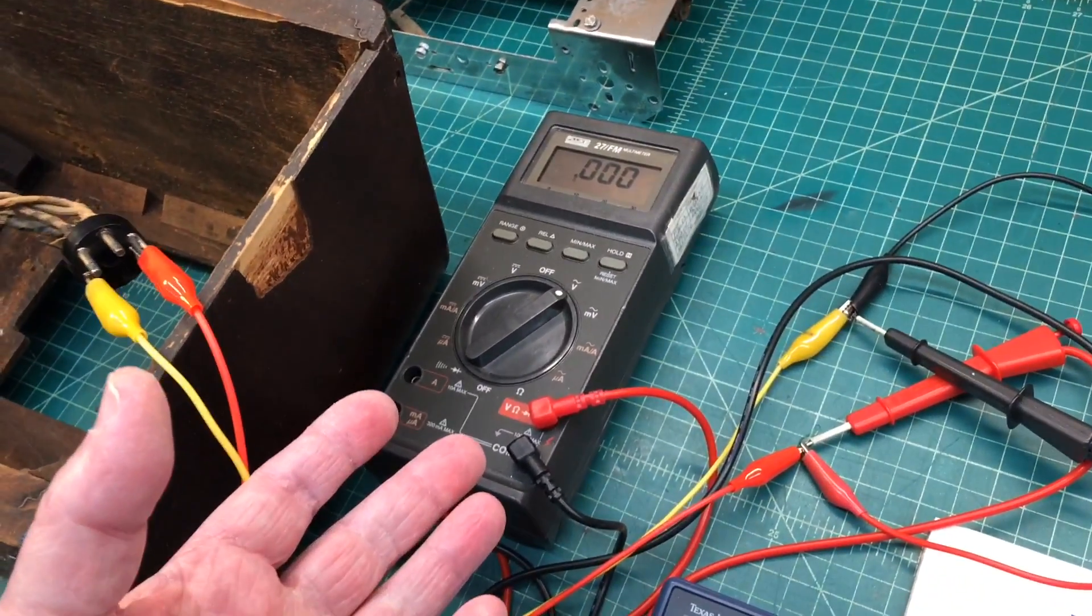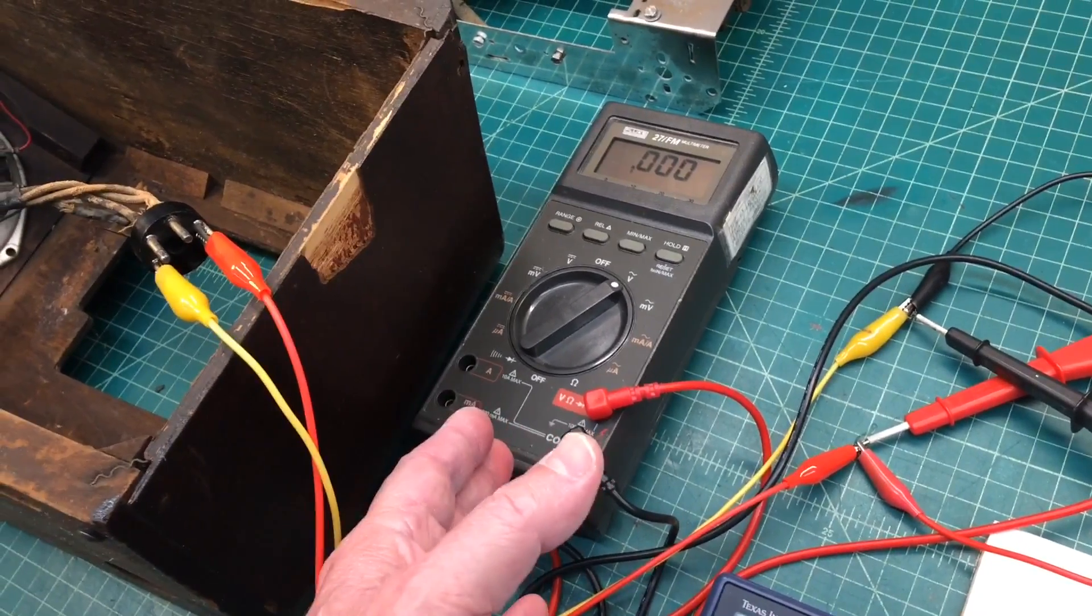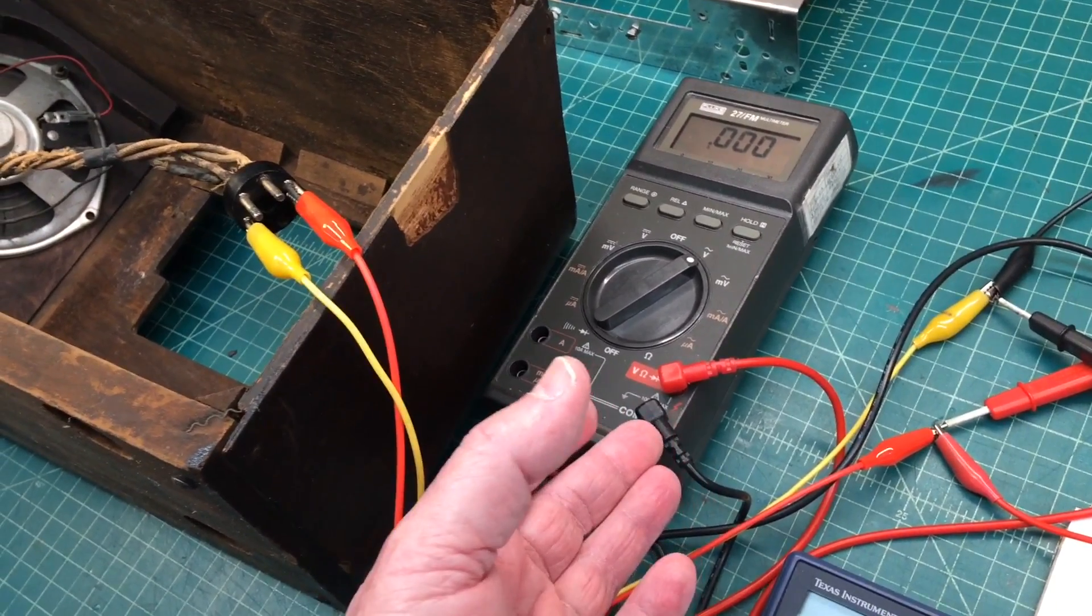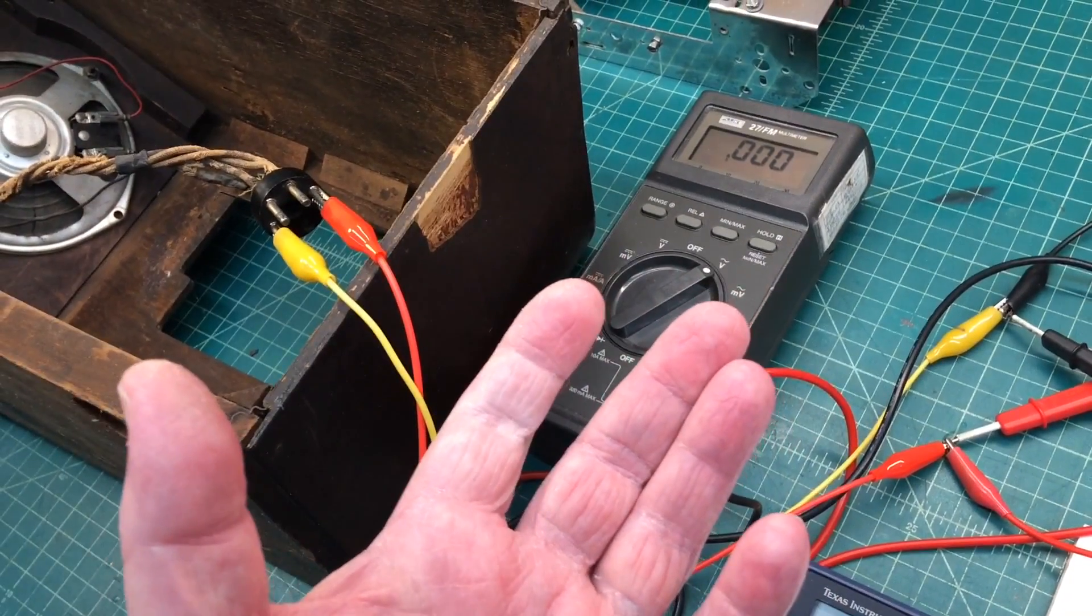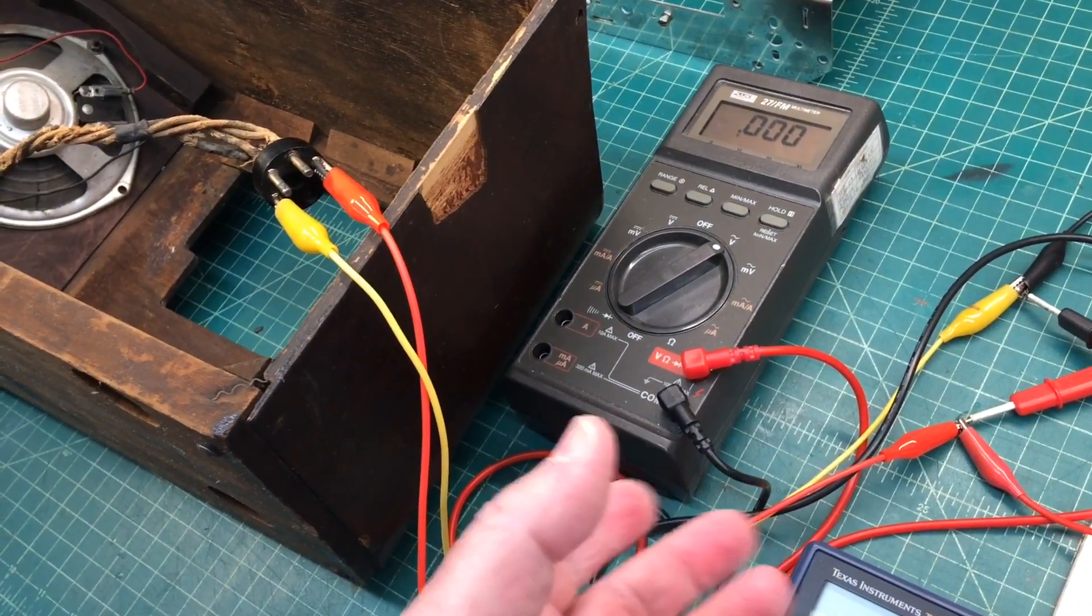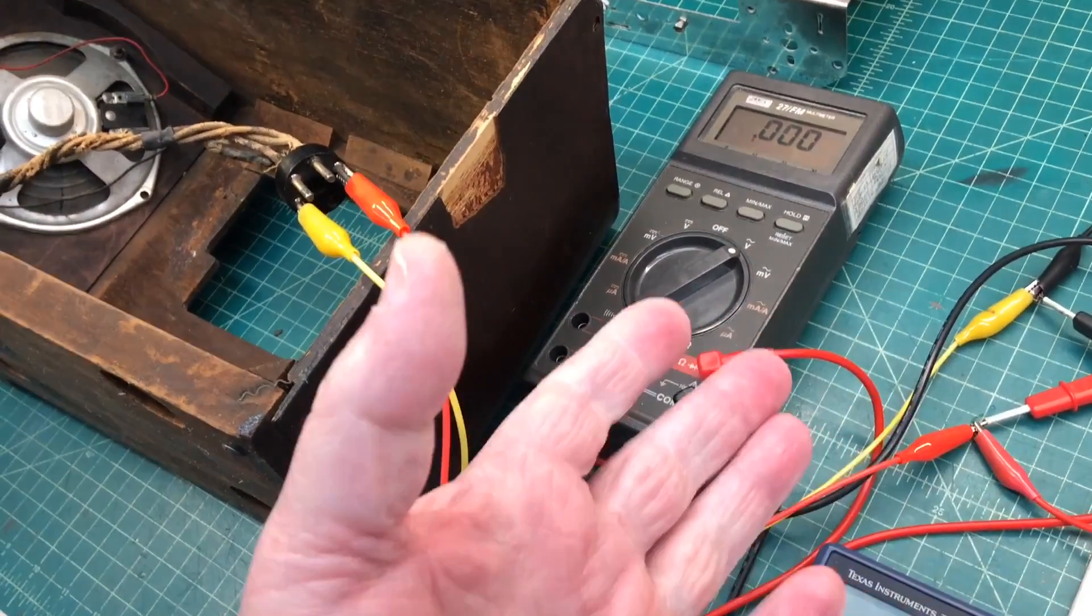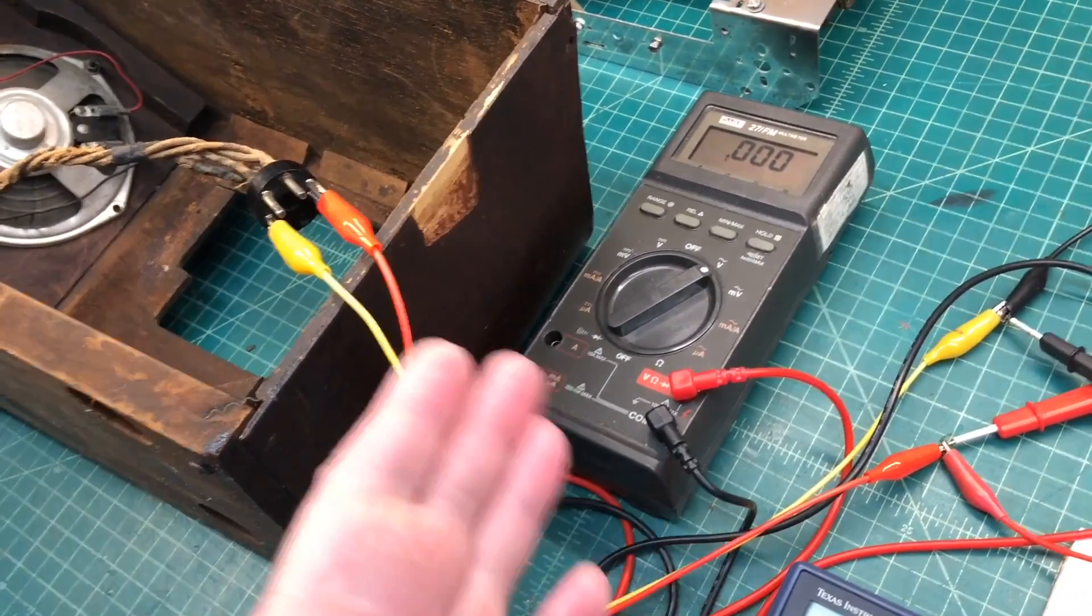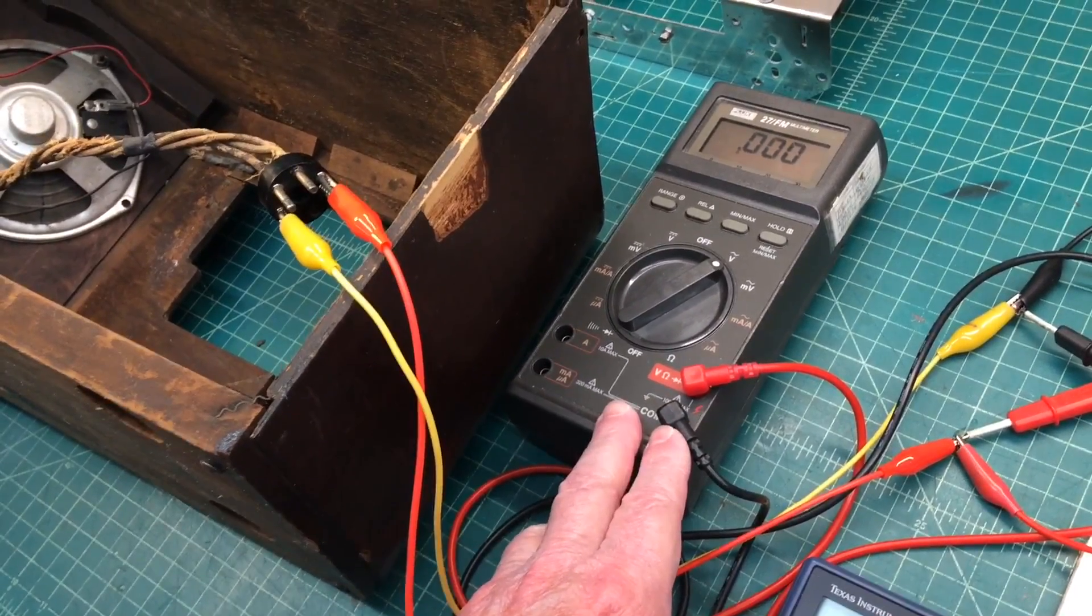A couple things that I'll need to do this. I've got my Fluke 27FM out and the advantage of this meter, I can read AC current up to 1000 Hertz. Of course, there's always a percent of error, and that's called out in the manual. So I just want to make sure that that's noted.